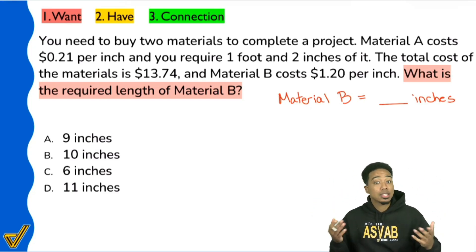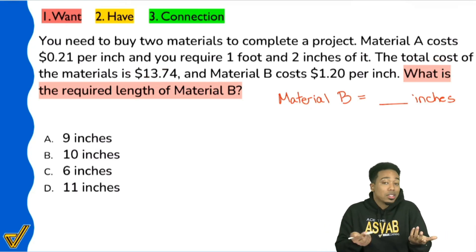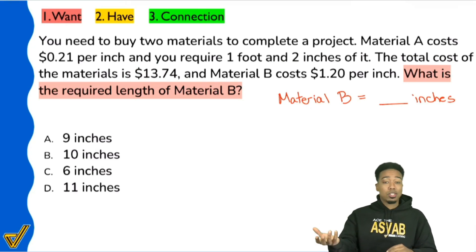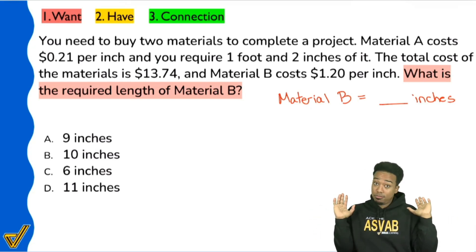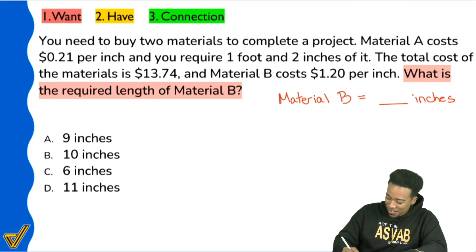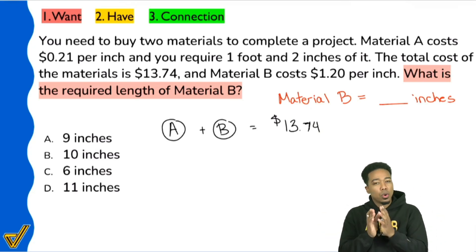The overarching theme is that we have a total. The total cost of the materials is this much money. How do we get the total? We get the total by saying, if I buy material A and I buy material B, the total is just adding material A and material B's cost together. So with that said, what I'm going to do is say, material A plus material B, that's going to equal the total amount, which is $13.74. All right, awesome.